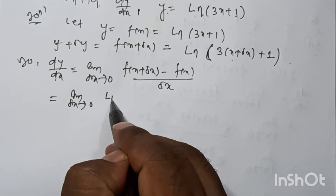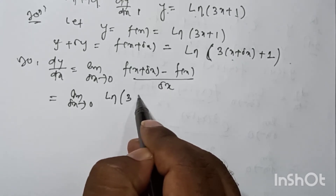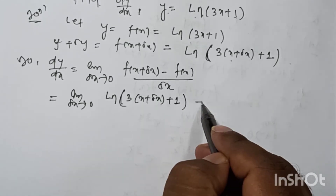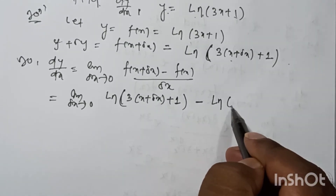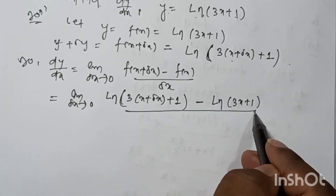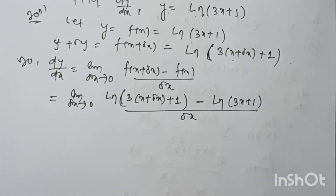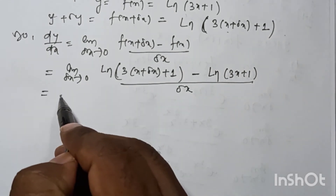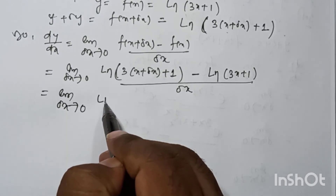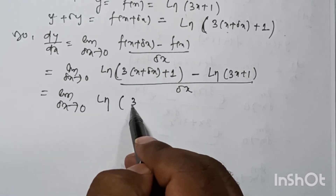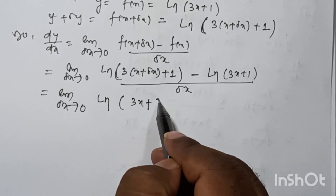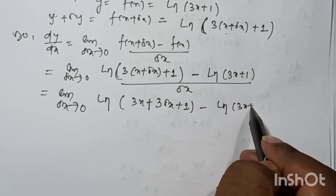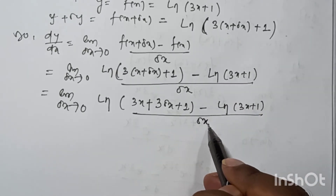Putting in the values: limit as δx tends to 0 of [ln(3(x + δx) + 1) minus ln(3x + 1)] divided by δx. That is: limit as δx tends to 0 of [ln(3x + 3δx + 1) minus ln(3x + 1)] divided by δx.